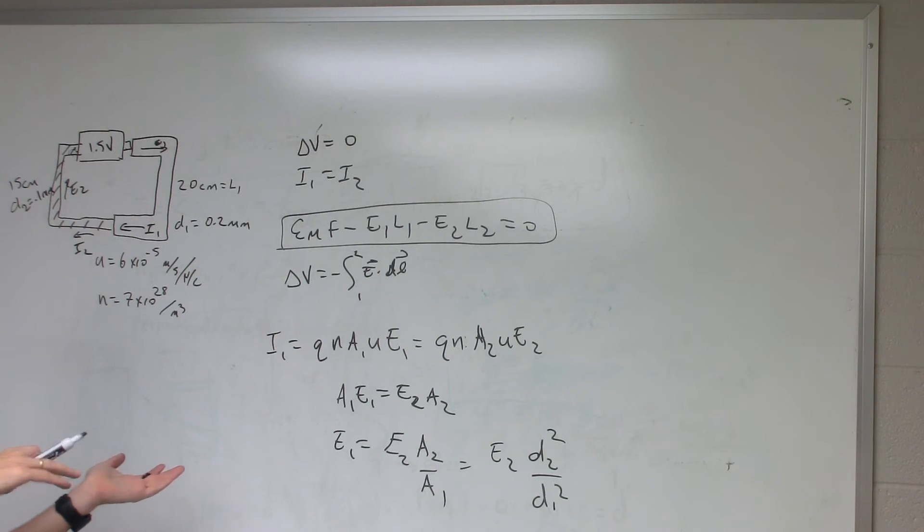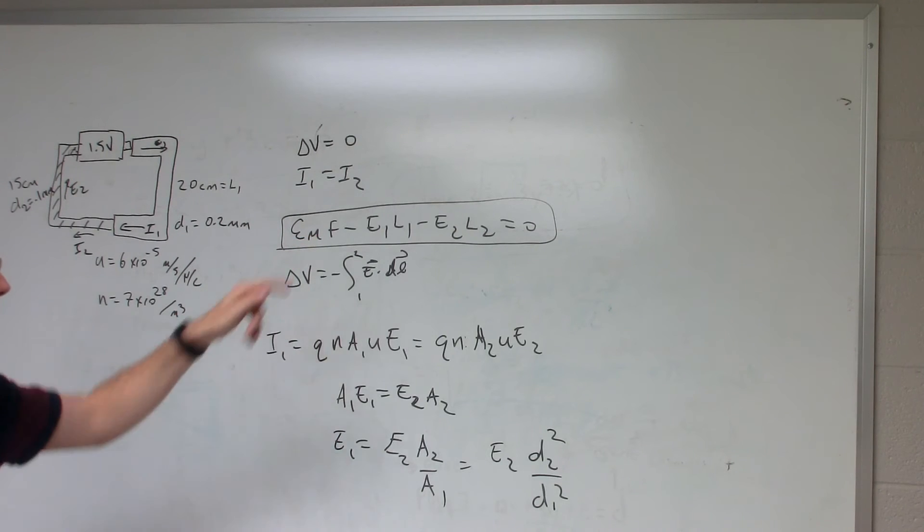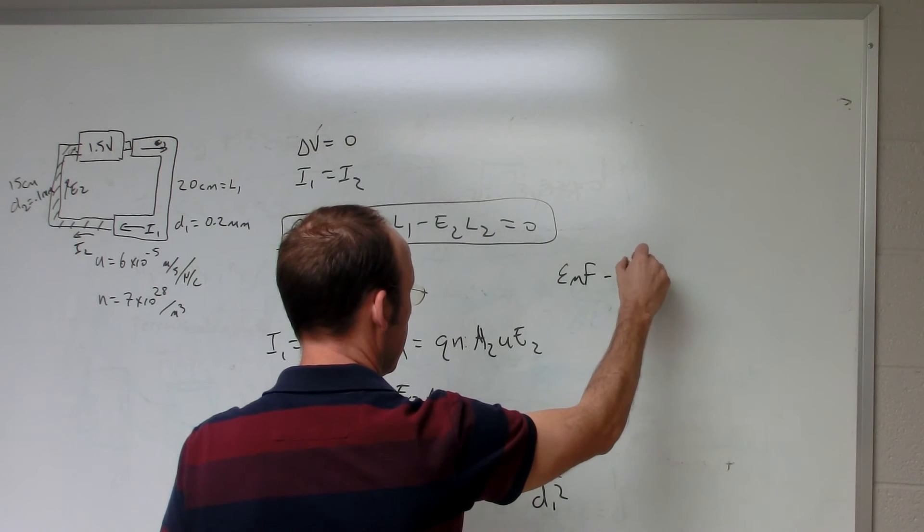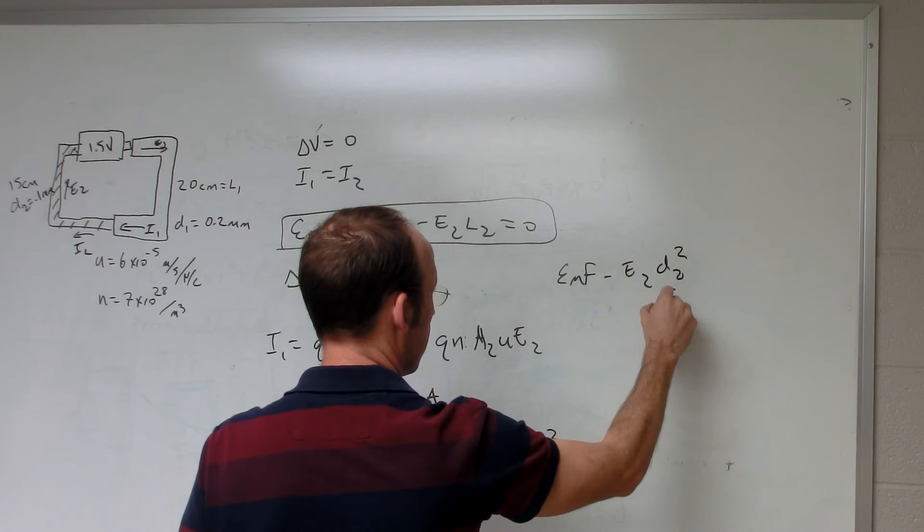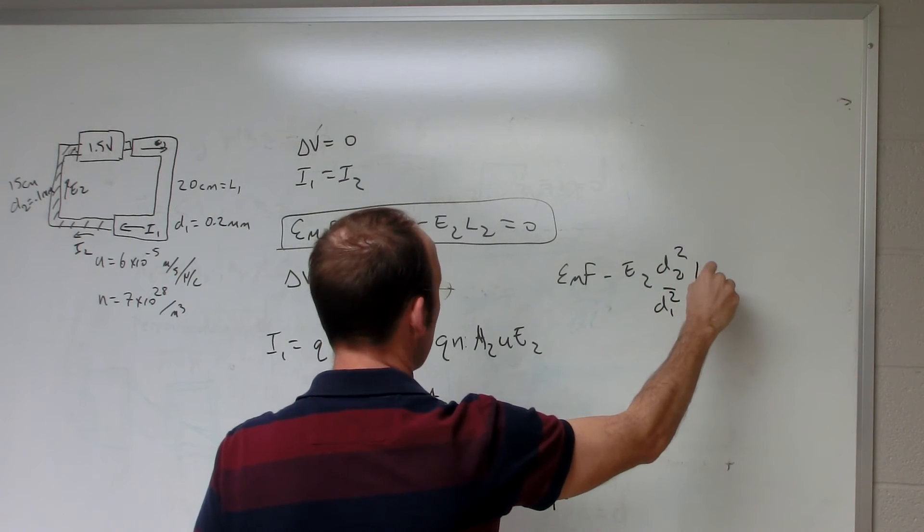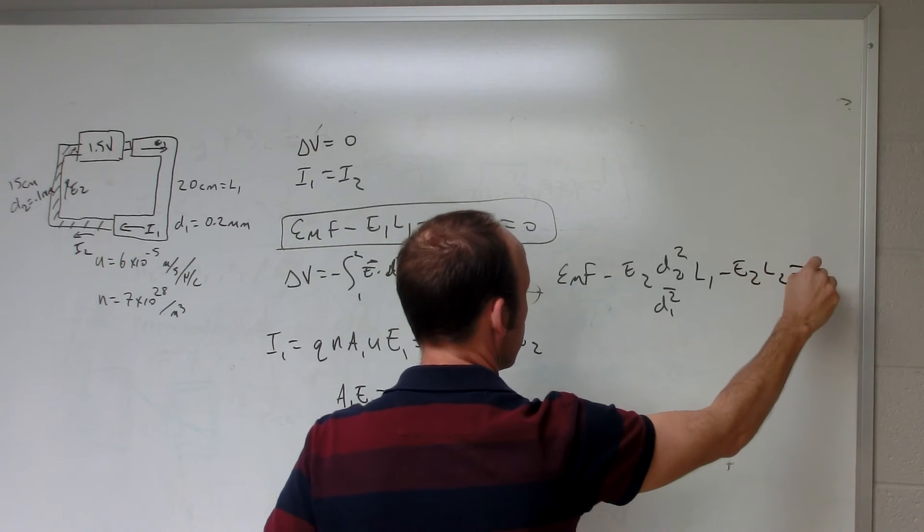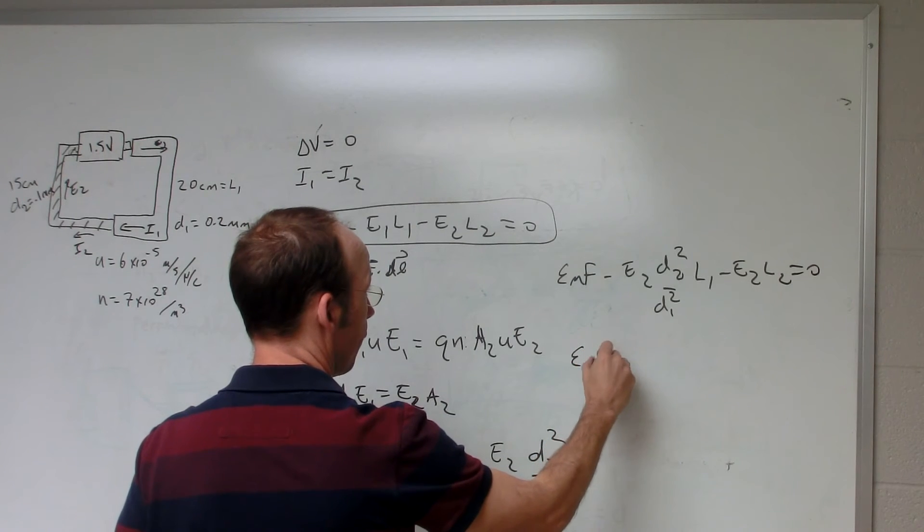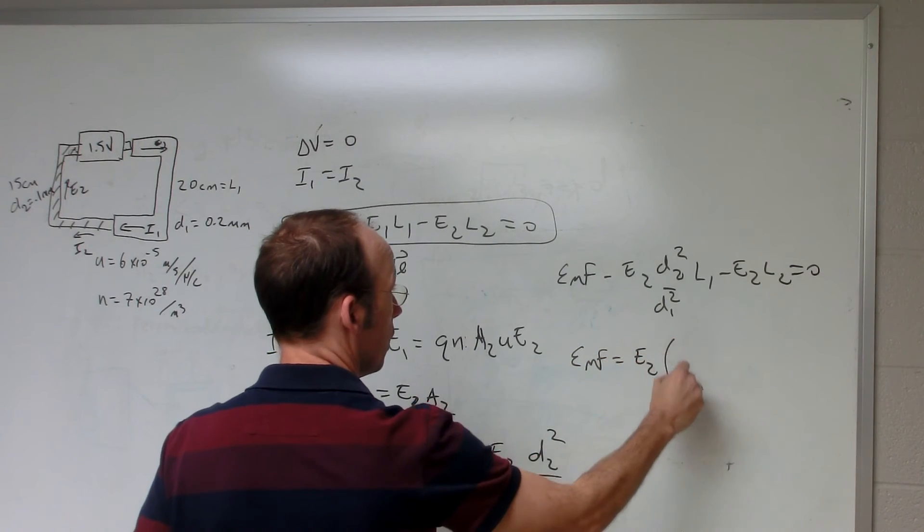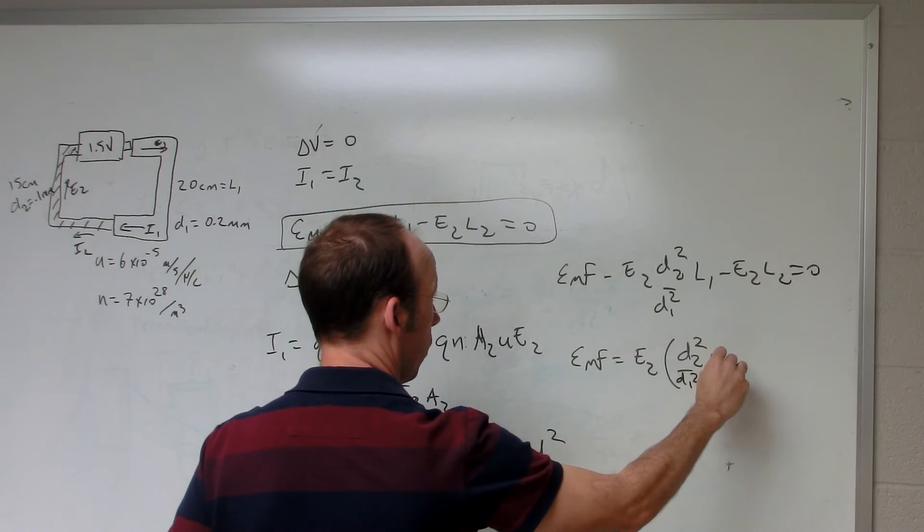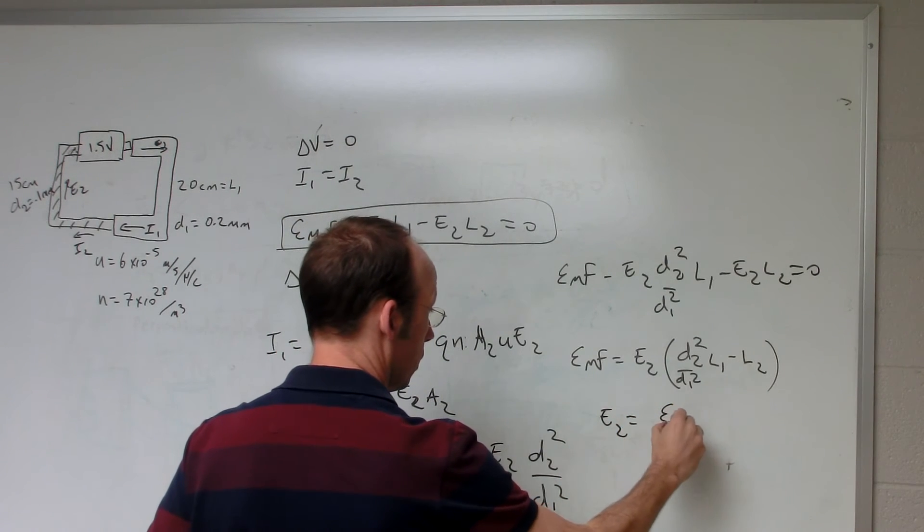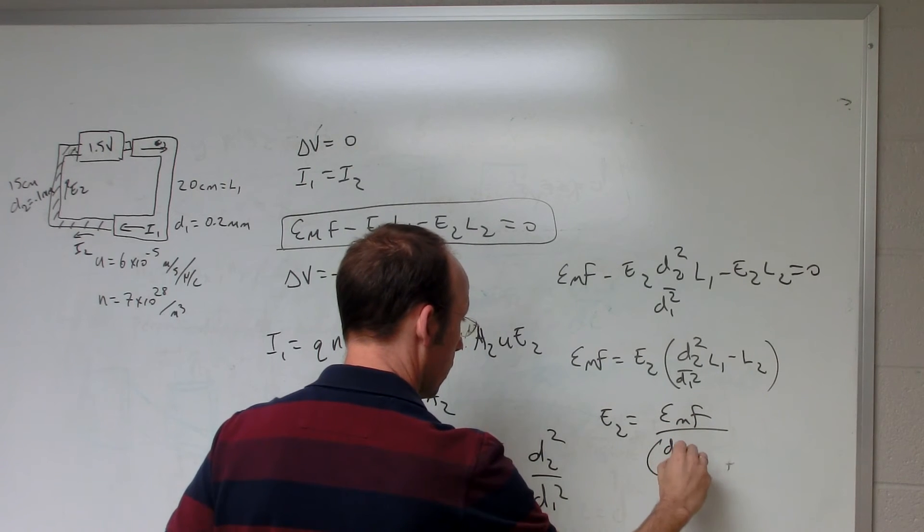But the area is proportional to the diameter squared. So now if I put that in up here, I get EMF minus E1, which is this, E2 D2 squared over D1 squared times L1 minus E2 L2 equals zero. So I can solve this for E2. I'll write this as EMF equals E2 times D2 squared over D1 squared times L1 minus L2. So E2 is going to be equal to EMF over D2 squared over D1 squared times L1 minus L2.